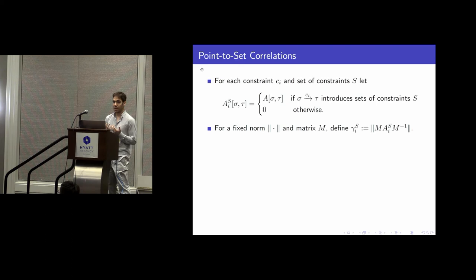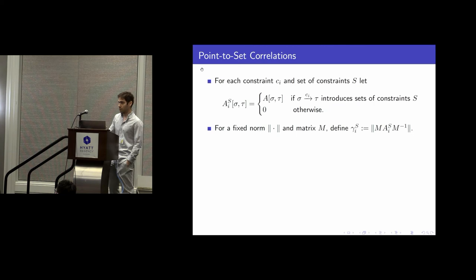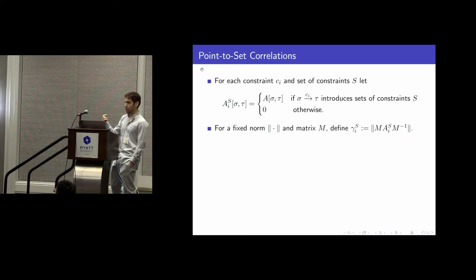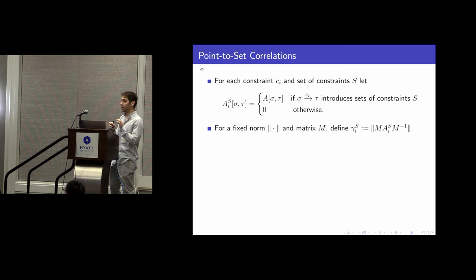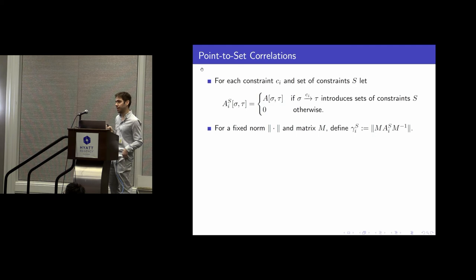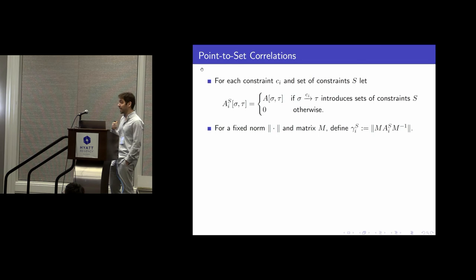Once we realized that, we asked: what if we try to be more refined? What if we decompose A not into a sum with one matrix per constraint, but with one matrix for each constraint and the set of constraints it could possibly violate? The idea is that bounding the norms of these matrices is a more refined and detailed way to understand the difference between the distribution induced by the actions of the algorithm and the target probability distribution mu. So we focus on these point-to-set correlations and are able to analyze more complicated algorithms.